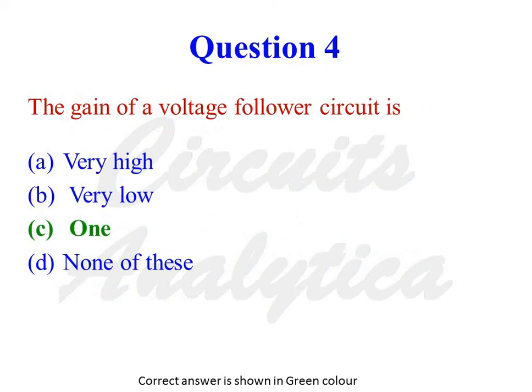The gain of a voltage follower circuit is — the options are: very high, very low, one, or none of these. The correct answer is one. For a voltage follower, gain is equal to unity, or one.